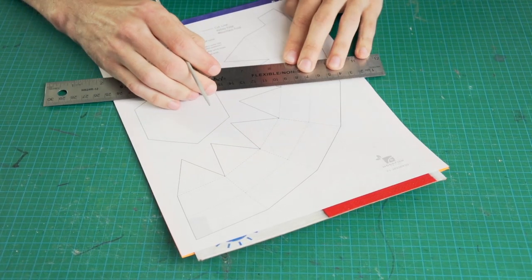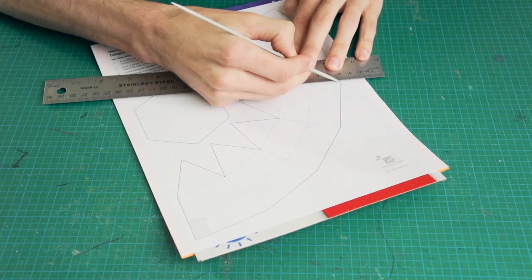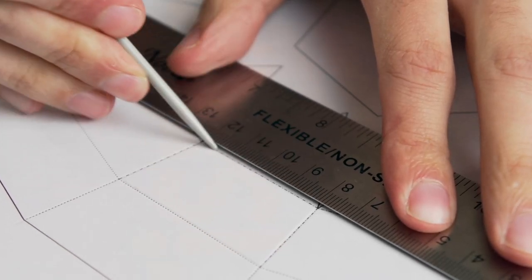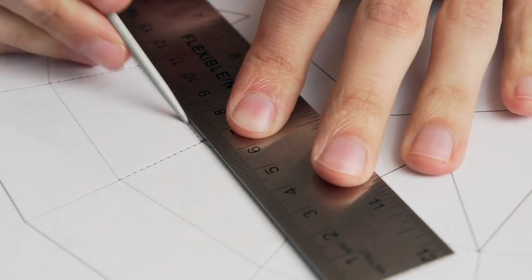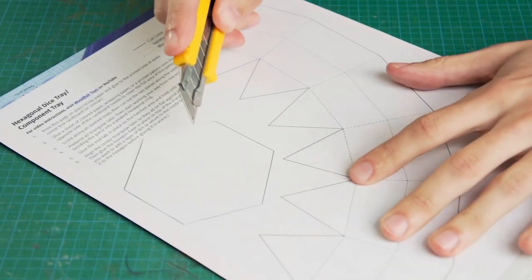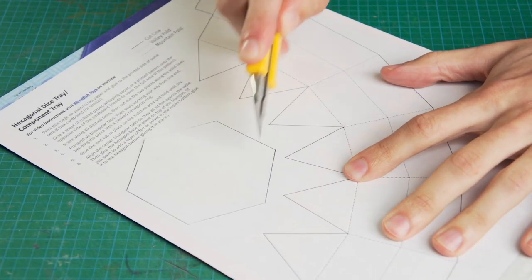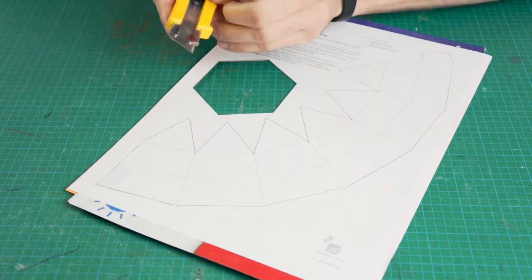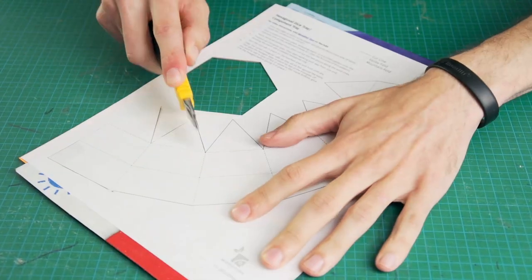Once the glue has dried, score all the dashed lines on the template using a ruler and something like a butter knife or a knitting needle. You want to stretch the fibers here but not cut through them. Then cut out the two pieces along all the solid lines using a sharp knife or scissors.